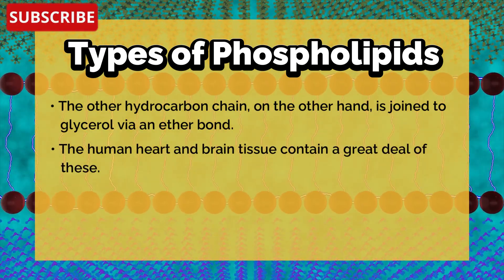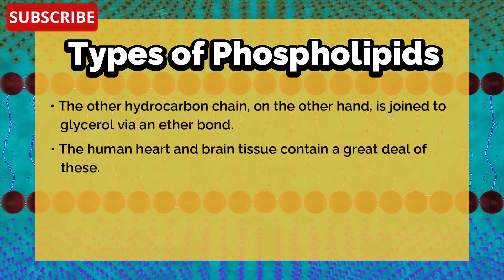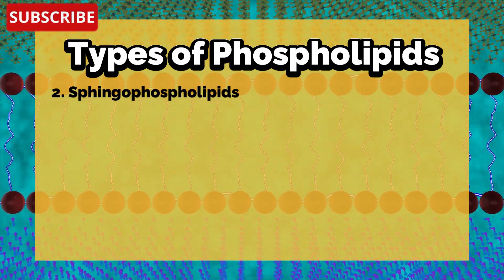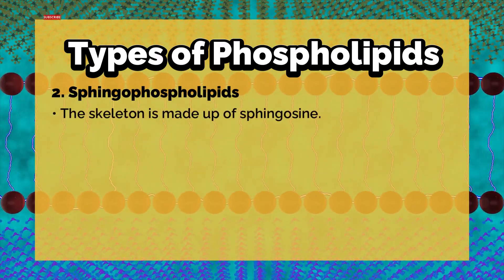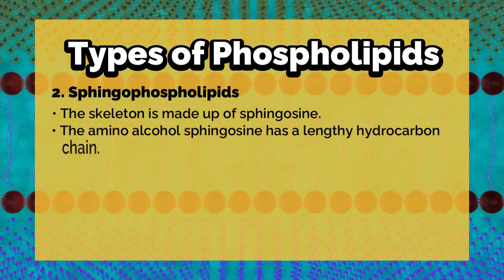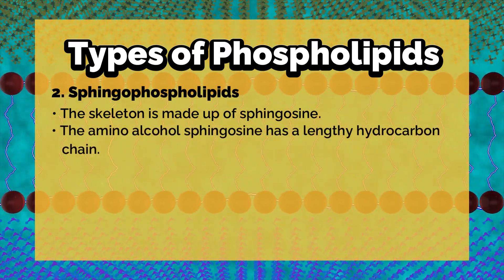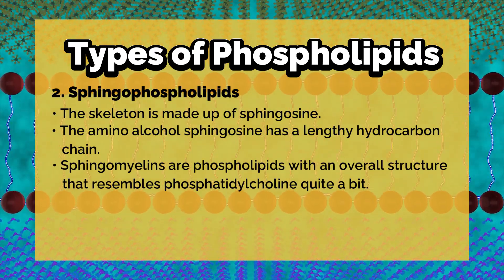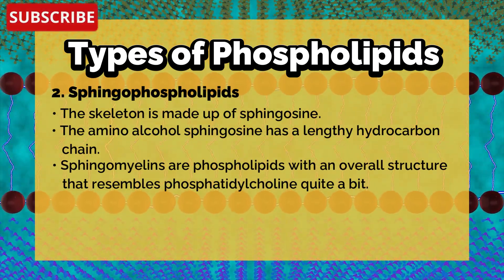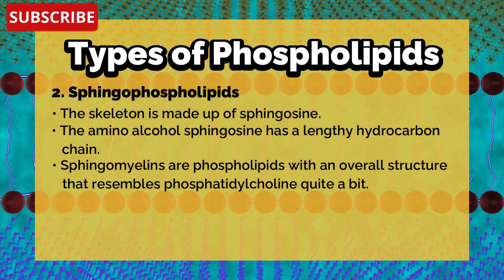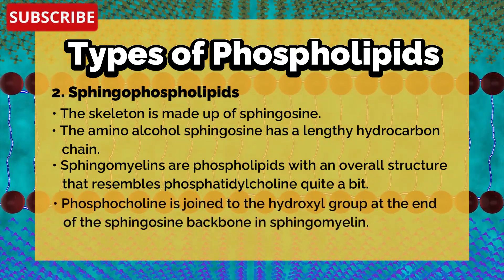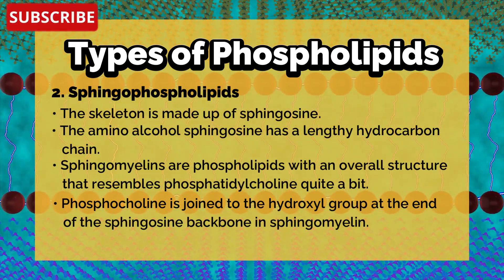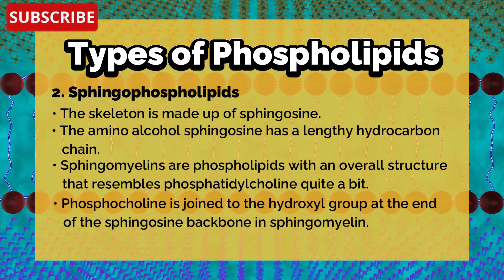Human heart and brain tissue contains a great deal of plasmalogens. Second, sphingophospholipids: the skeleton is made up of sphingosine, an amino acid with a lengthy hydrocarbon chain. Sphingomyelins are phospholipids whose overall structure resembles phosphatidylcholine quite a bit. Phosphorylcholine is joined to the hydroxyl group at the end of the sphingosine backbone in sphingomyelin.